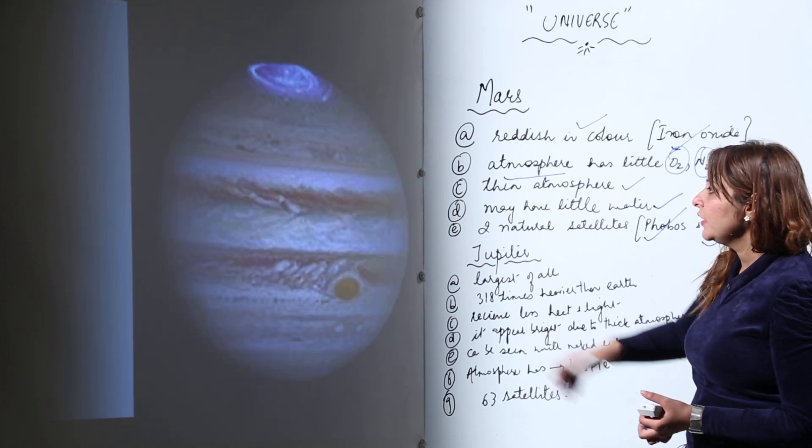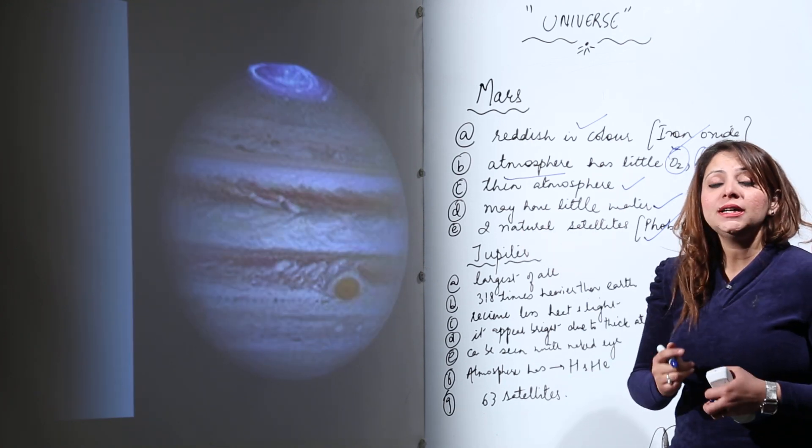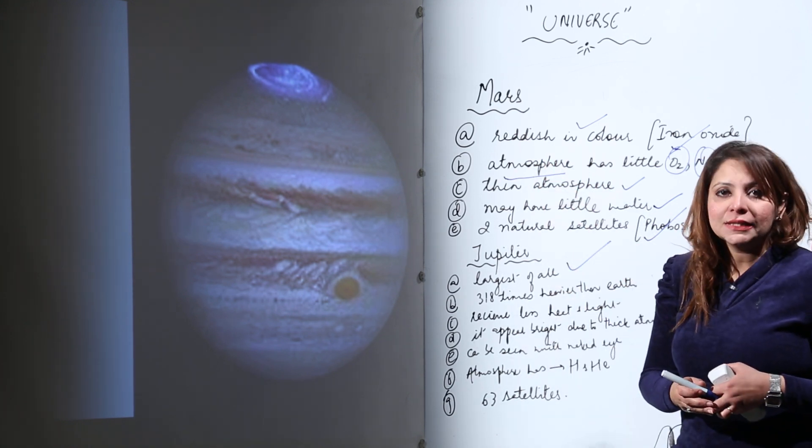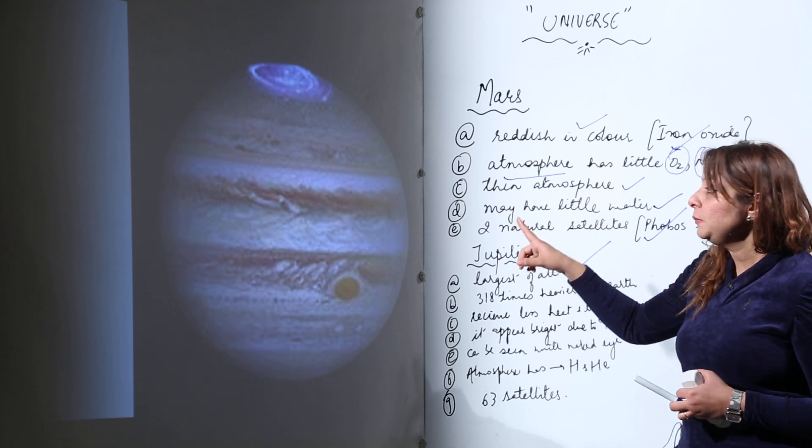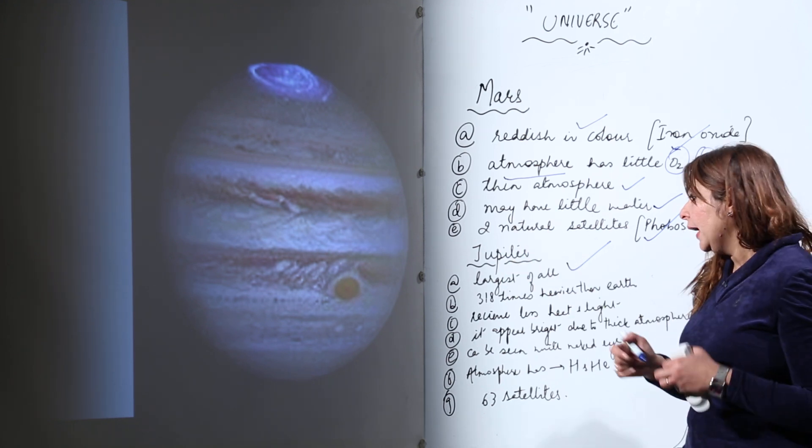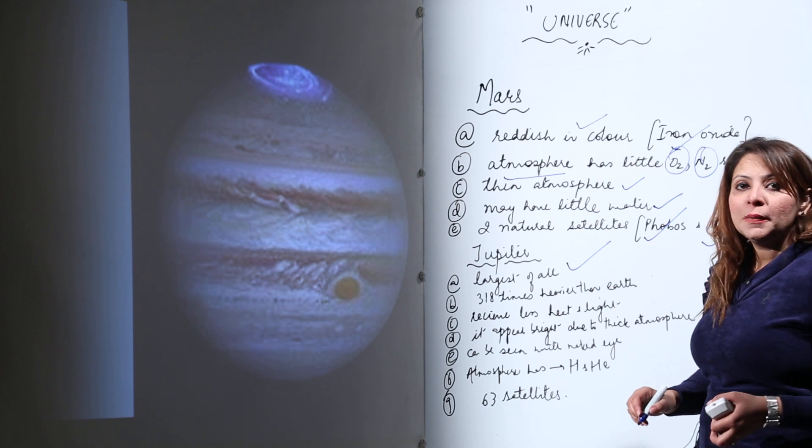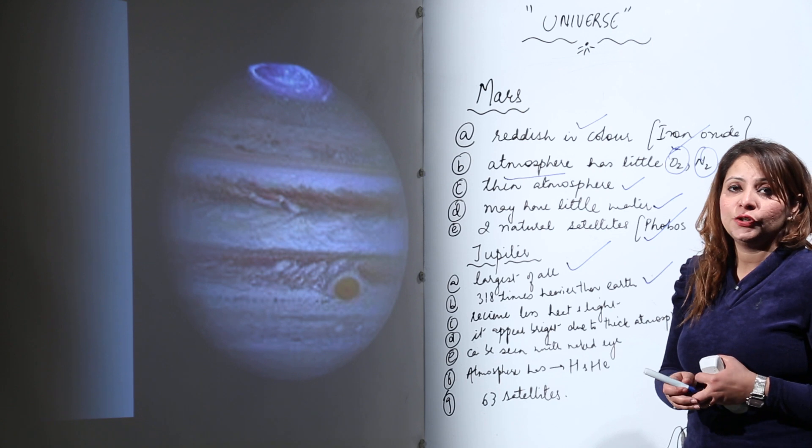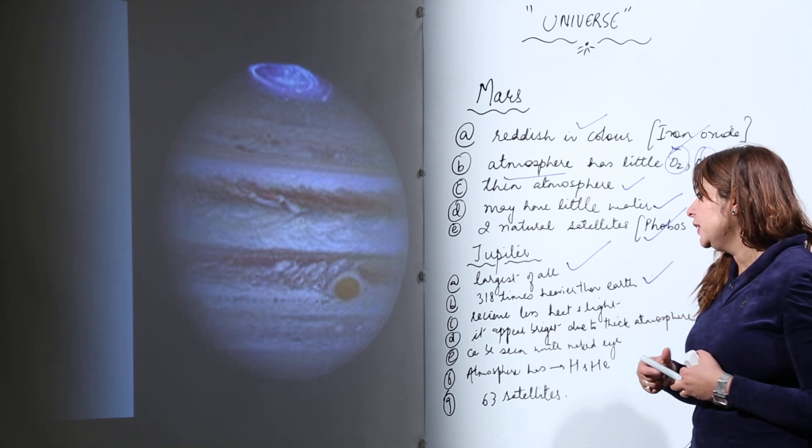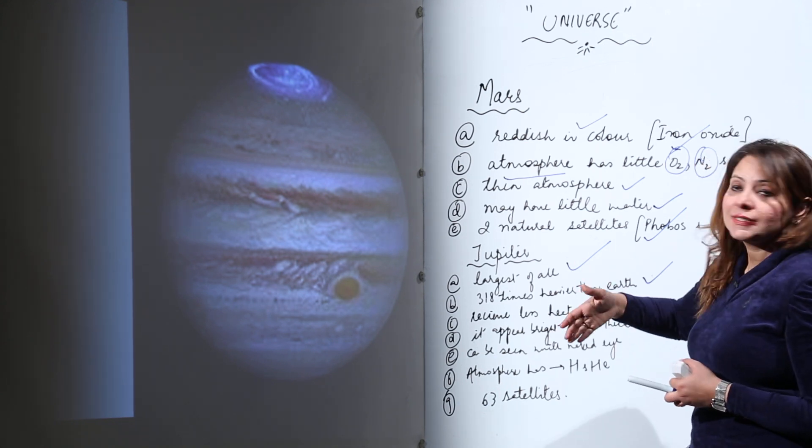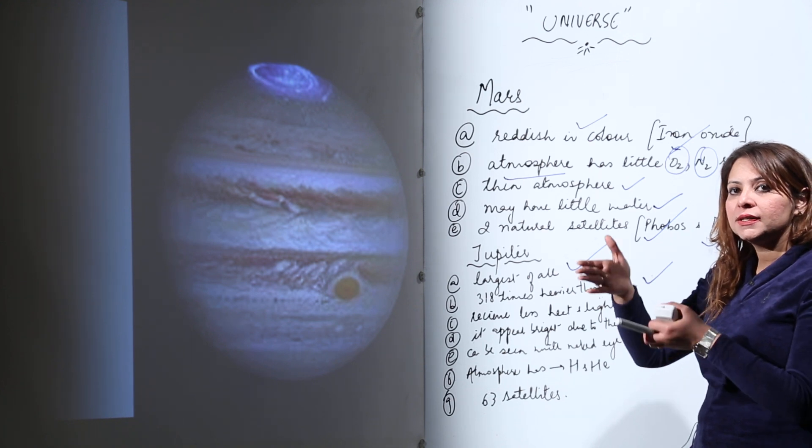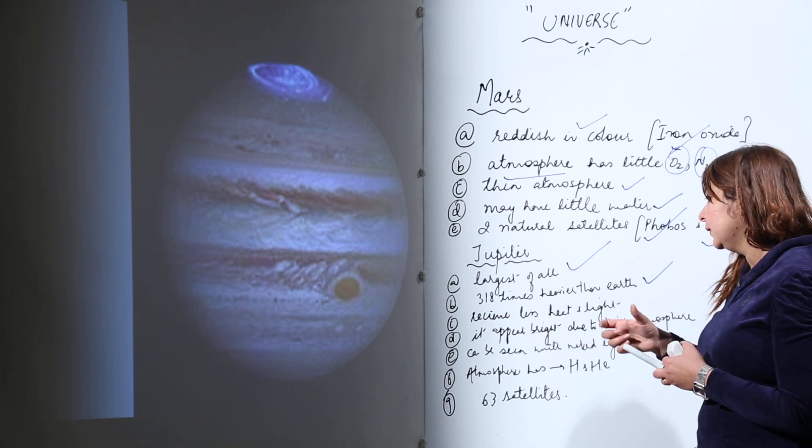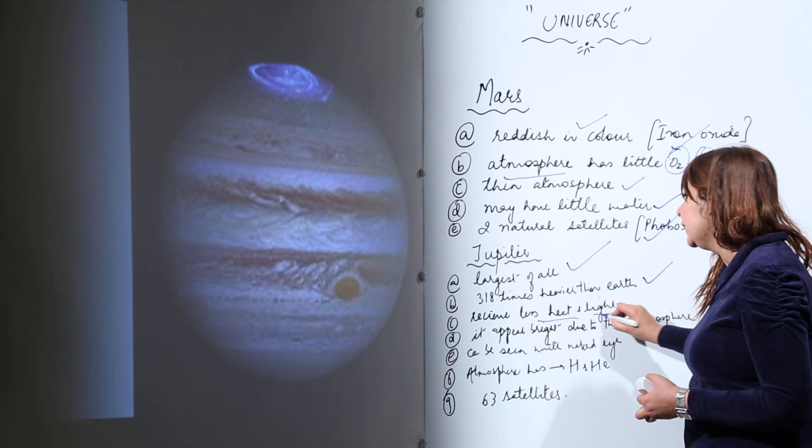After Mars, we have Jupiter. Jupiter is the largest planet of all, and this is a planet which can be seen even with the naked eye. If we talk about its mass, it is 318 times heavier than Earth. As it has Mercury, Venus, Earth, and Mars before it, it receives comparatively less heat and light compared to the Earth and Mars.